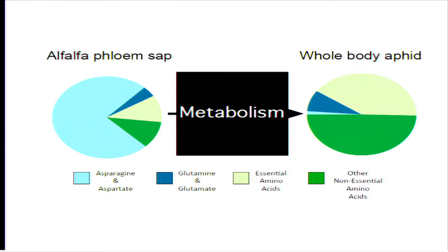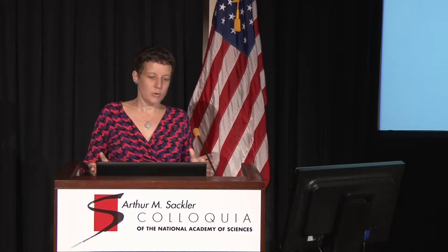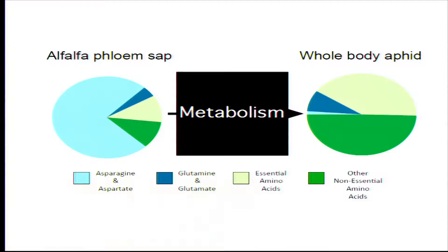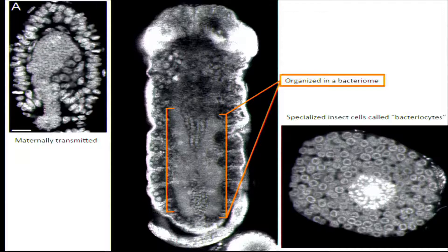Over the past several years in my lab, we've been working mostly on this question of how do you go from the pie chart on the left — this diet of phloem sap — to the pie chart on the right. The challenge is that phloem sap, xylem sap, and indeed blood don't contain sufficient nutrients in the appropriate amounts to support aphid growth and development. These animals have gotten around this problem by forming ancient obligate intracellular symbioses with bacteria.